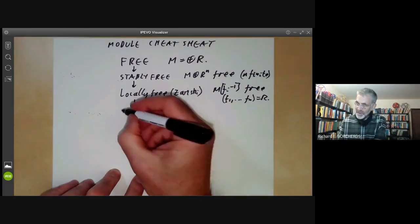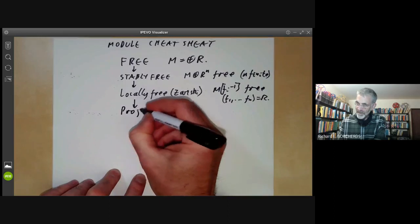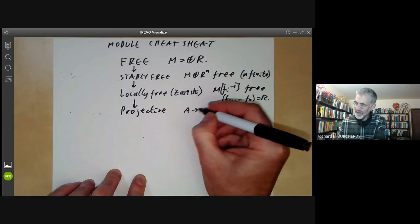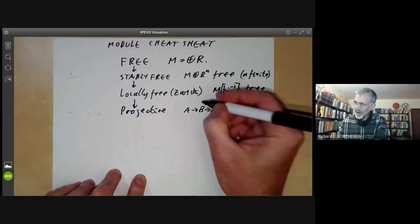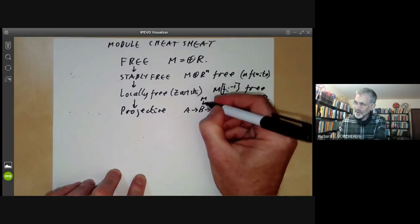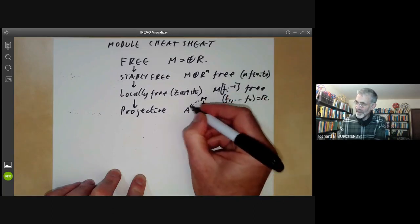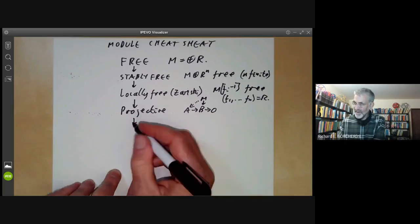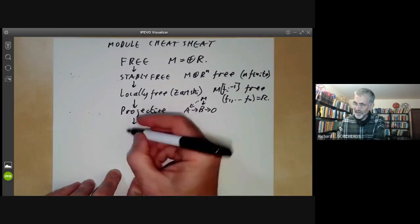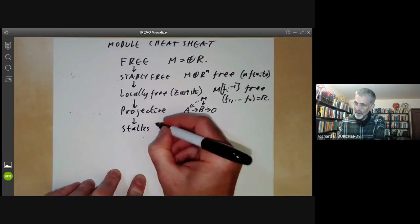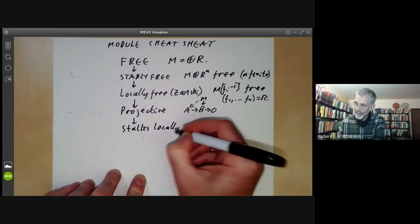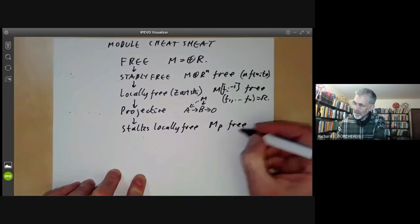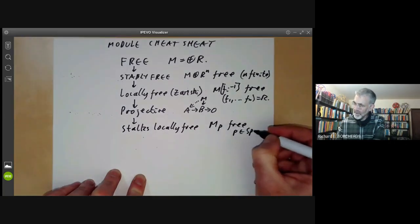And locally free modules are also projective. So we recall projective means if you've got a map from A to B to zero of modules and A maps onto B and your module maps onto B, then this can be lifted to A. And projective modules satisfy a slightly different version of the locally free condition. This says that the stalks are locally free. So this means M_P is free for all P in the spectrum of M.